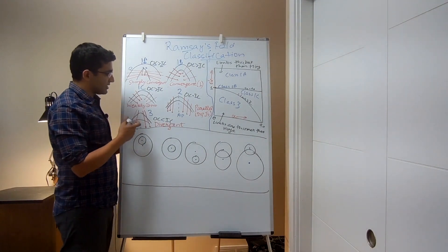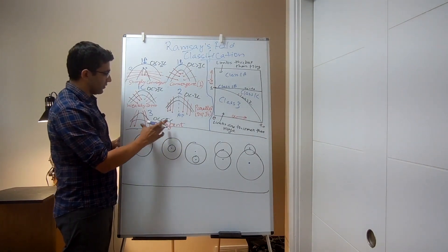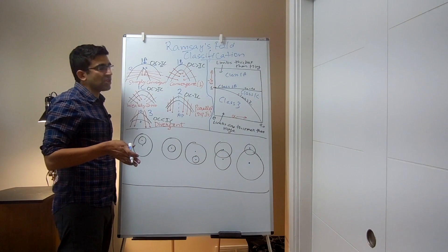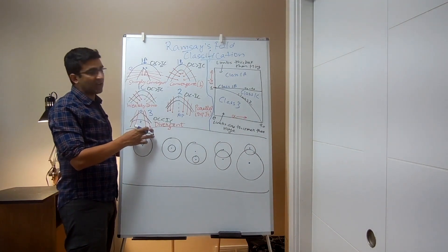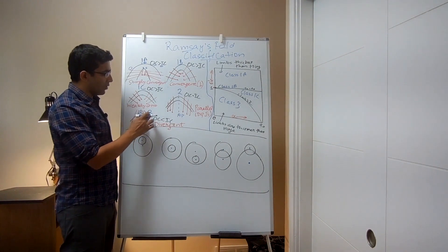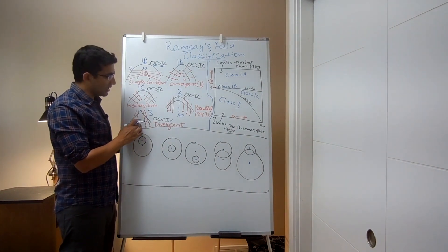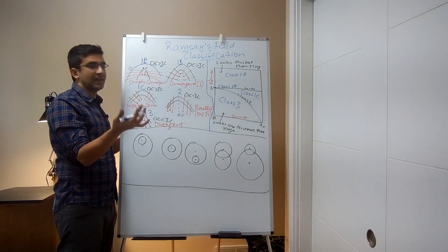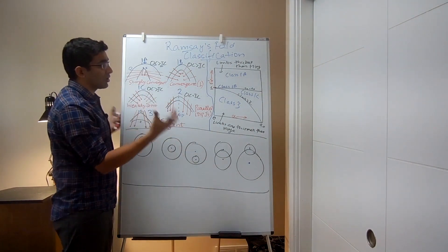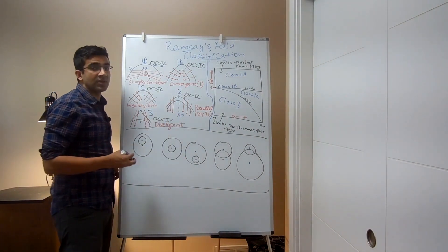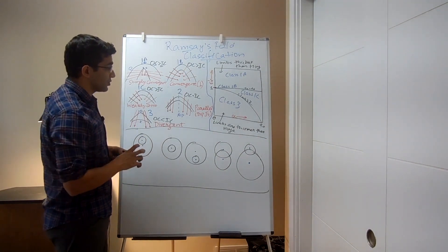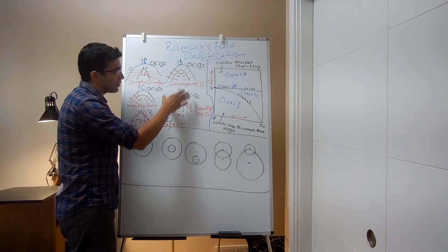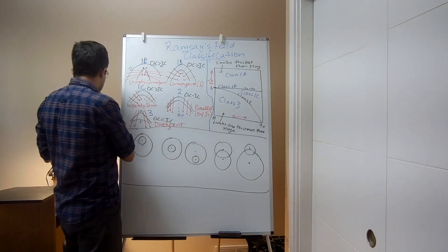For class 3, we have this divergent pattern. As we move from the outer to the inner fold surface, the dip isogons are moving away from one another. This class has the peculiar feature that outer curvature is actually less than inner curvature. In class 2, outer curvature equals inner curvature, which is why these are known as similar folds. Do not confuse this - class 2 folds are not called parallel folds; they are similar folds.